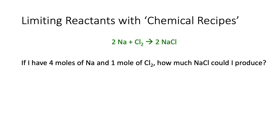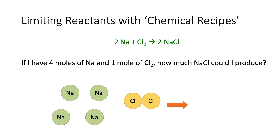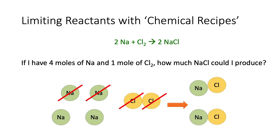Let's talk about limiting reactants. We've talked about balanced equations as chemical recipes, so now let's look at the chemical equivalent of making chocolate chip cookies. If we have four moles of sodium and one mole of chlorine gas, how many moles of sodium chloride could be produced? Let's do this pictorially. Here are the four moles of sodium and one mole of chlorine gas — I'm using one atom or molecule to represent each mole. We can take one sodium and one chlorine from the chlorine gas to get one mole of sodium chloride, then another sodium and the other chlorine to get a second mole. We still have sodium left, but there's no more chlorine to combine it with, so we're done — two moles of sodium chloride total.